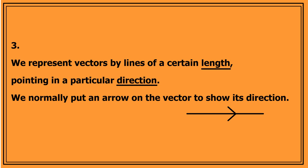Three, we represent vectors by lines of a certain length, pointing in a particular direction. We normally put an arrow on the vector to show that direction.